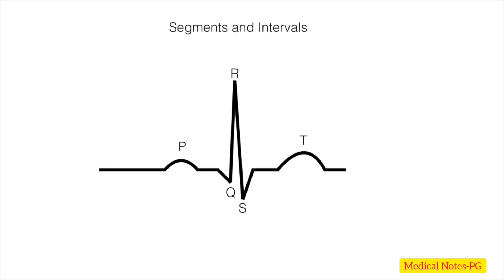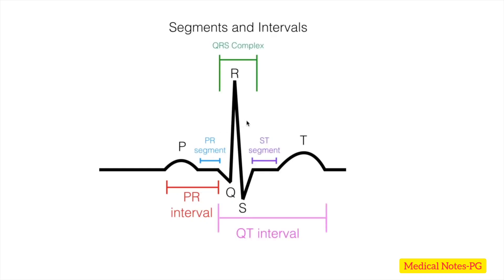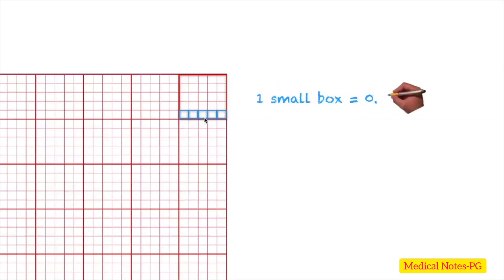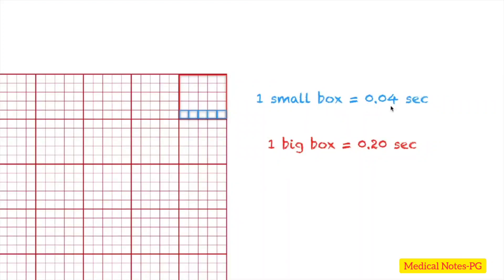Now let's discuss segments and intervals in an EKG diagram. We will focus on the PR interval and QRS complex, as these are what we need for EKG interpretation. On a typical EKG strip, there are big boxes and each big box contains five small boxes. Each small box equals 0.04 seconds, so one big box equals 0.20 seconds.